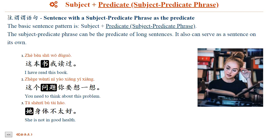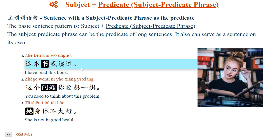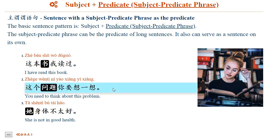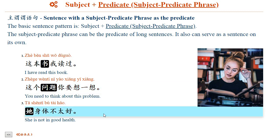The sentence pattern 主位位语句 — Sentence with a subject-predicate phrase as the predicate. For example: 这本书我读过。 这本书 is the subject of the whole sentence; 我读过 is the predicate, which is itself a subject-predicate phrase. 这个问题你要想一想。 他身体不太好。